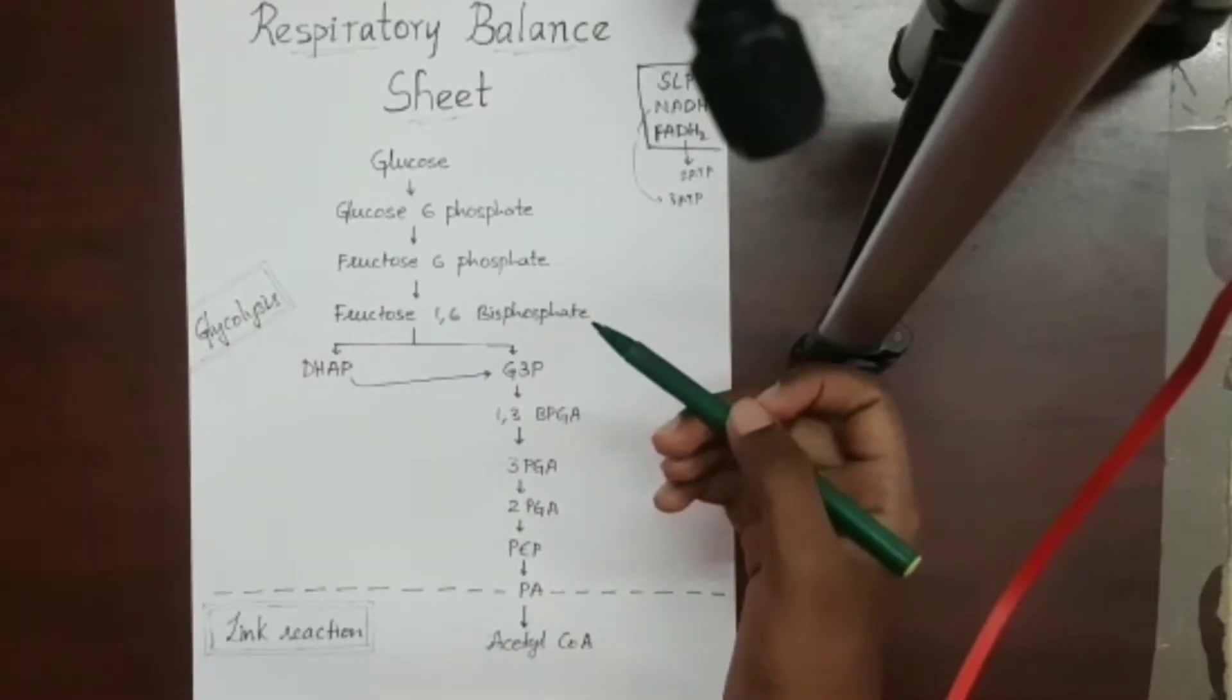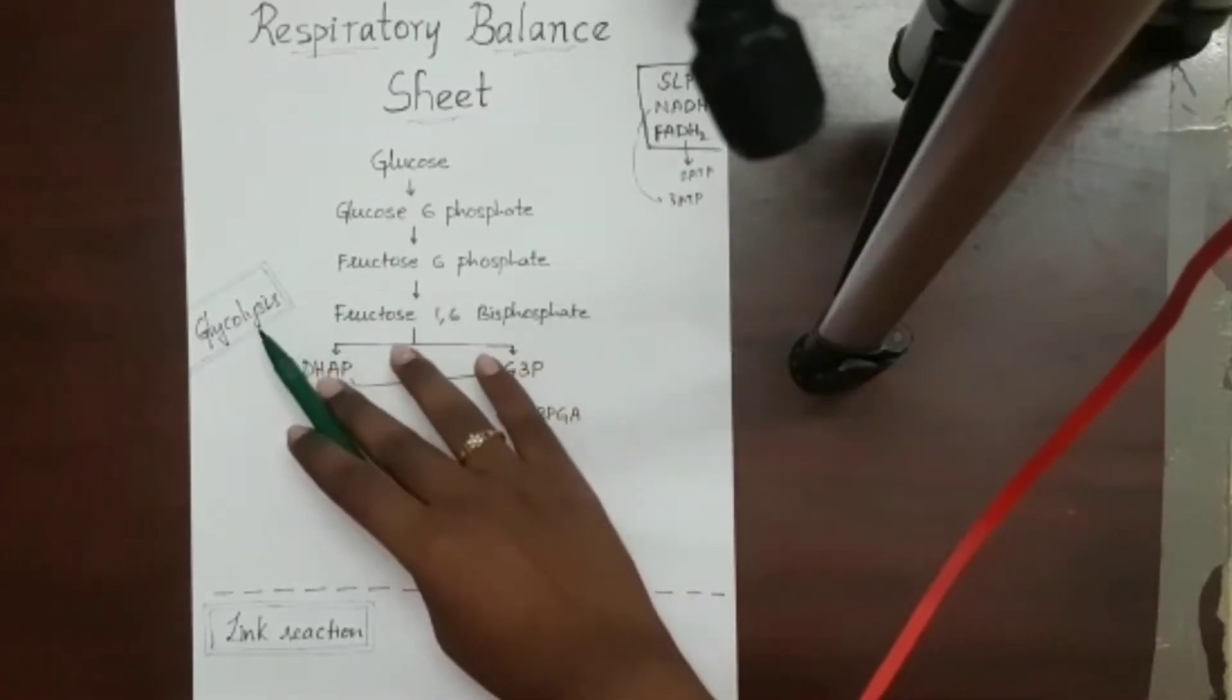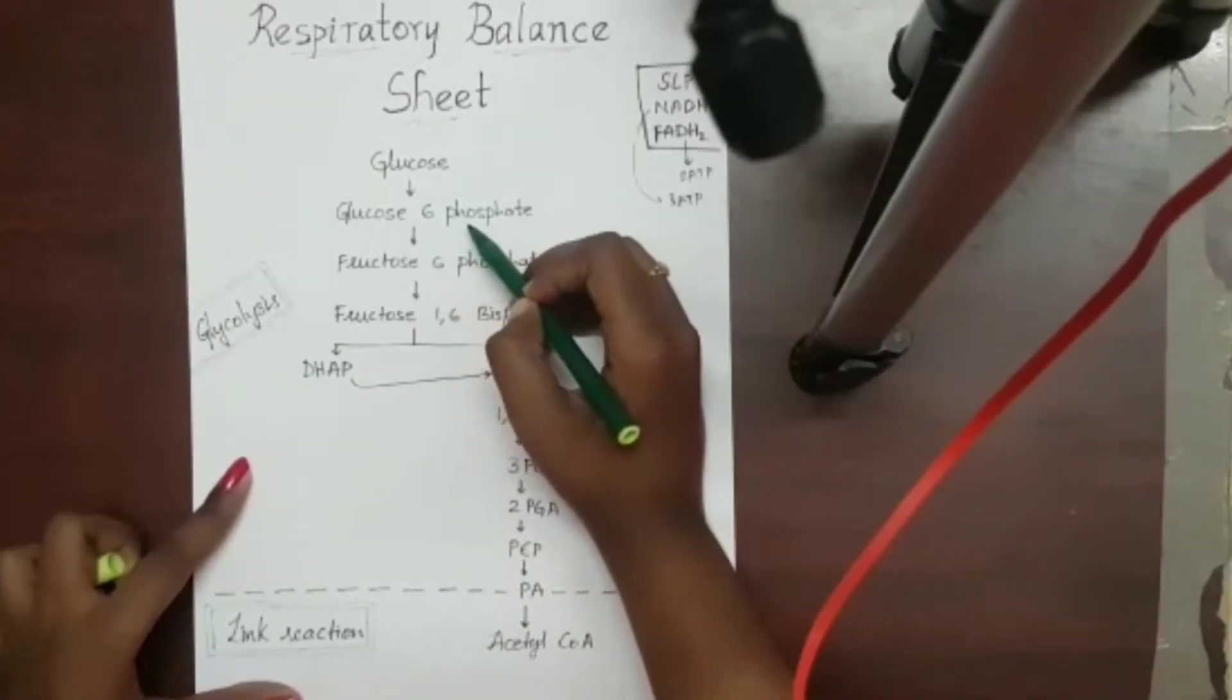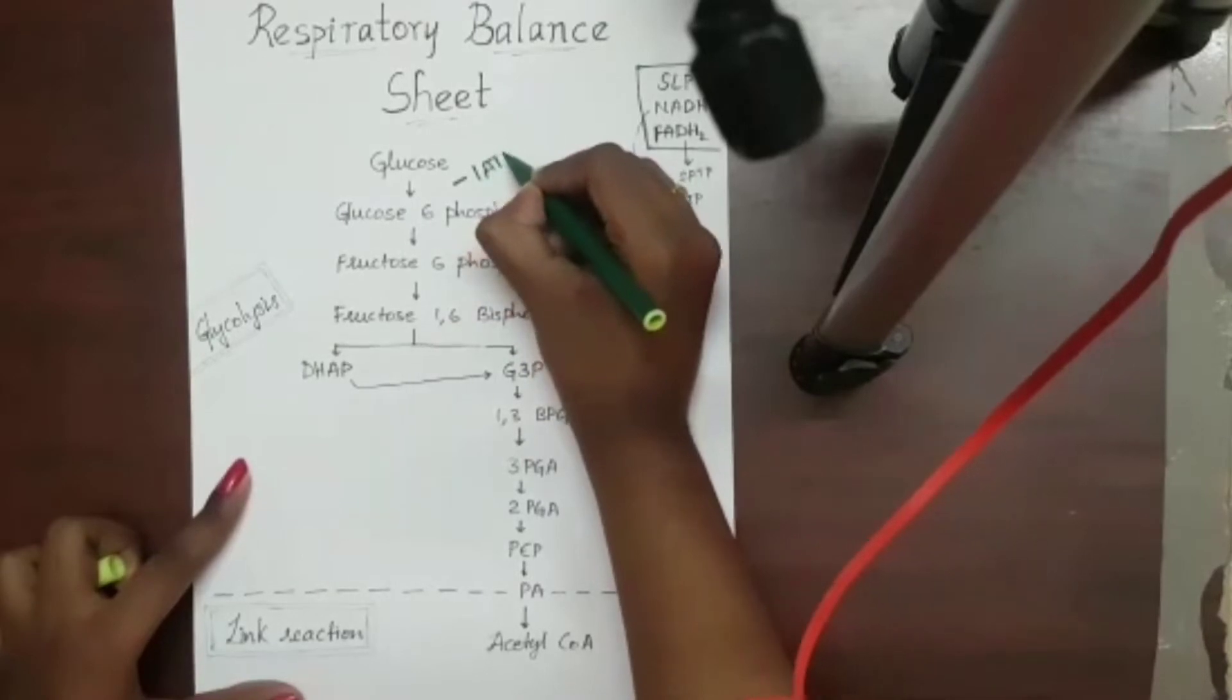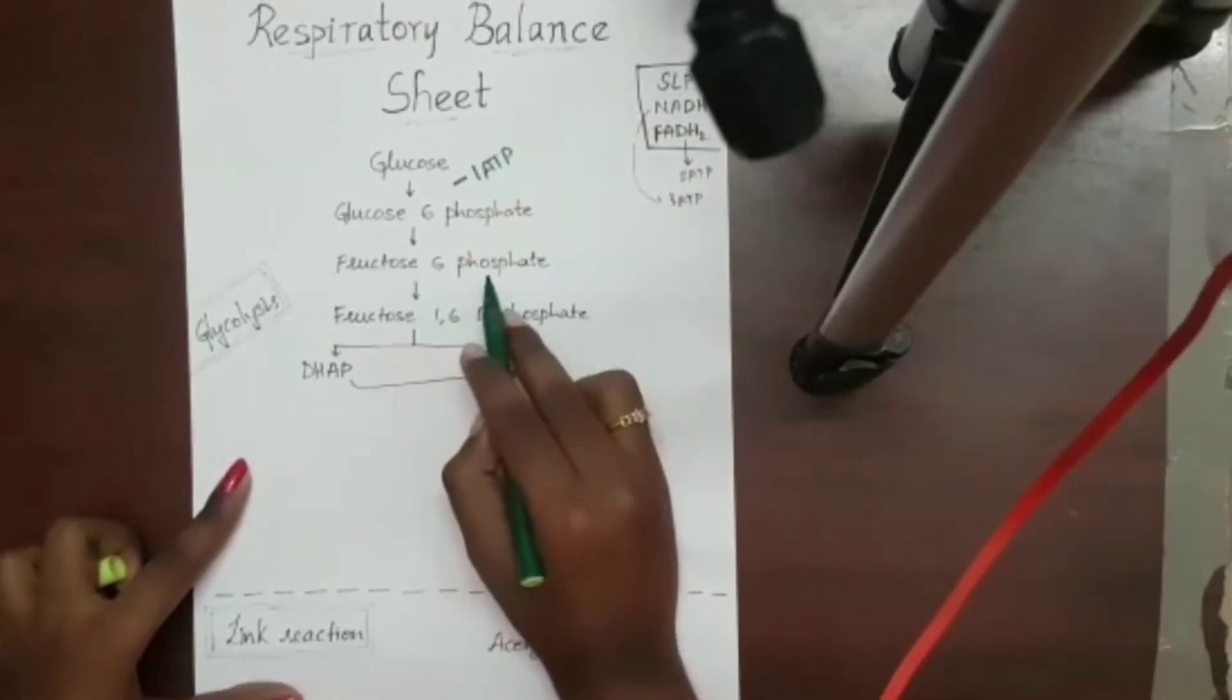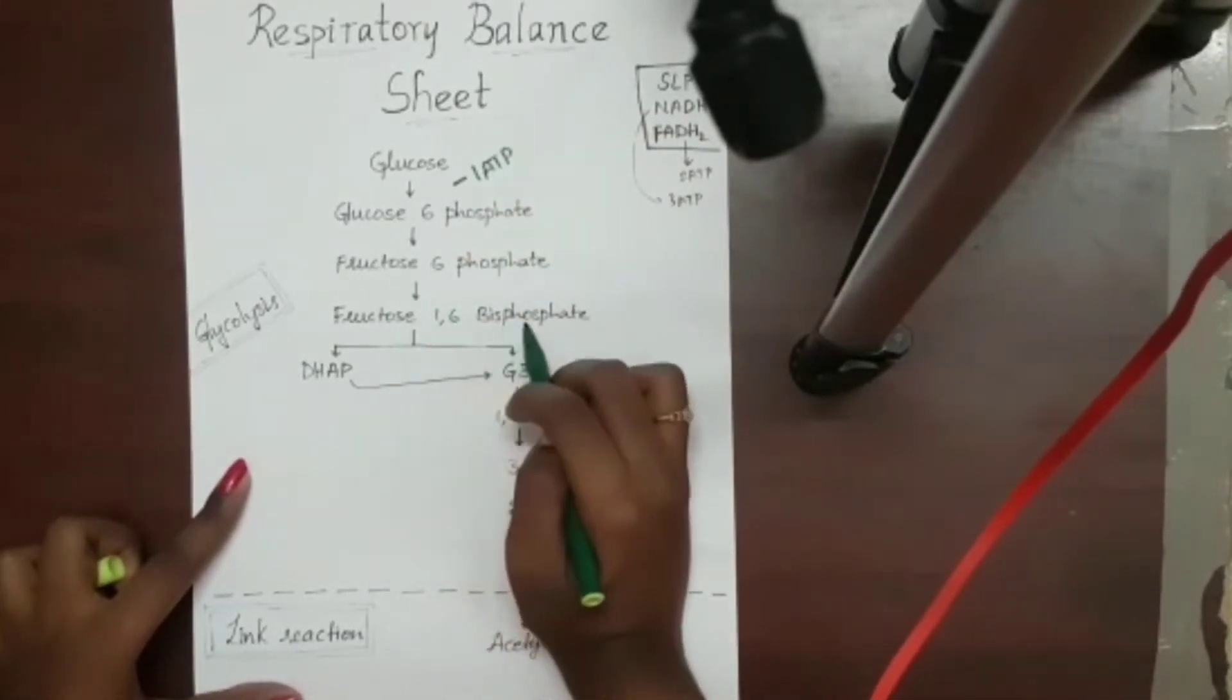Now, we will calculate the net gain of ATP in glycolysis. From glucose to glucose 6-phosphate, there is utilization of 1 ATP. And from fructose 6-phosphate to fructose 1,6-bisphosphate, there is utilization of another ATP molecule.